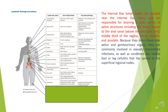Internal iliac lymph cluster. The internal iliac lymph nodes are situated near the internal iliac artery and are responsible for draining a wide variety of pelvic structures including the lower rectum to the anal canal above the pectinate line, middle third of the vagina, cervix, bladder, and prostate. They are commonly involved in sexually transmitted infections.